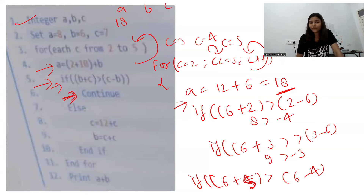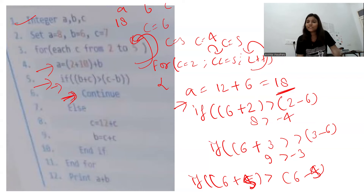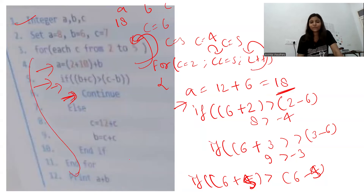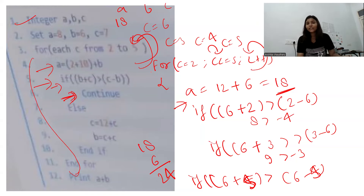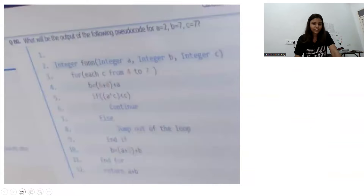For c equals 5: condition b plus 5 equals 11 is greater than 5 minus 6 equals minus 1 — still true, continue again. Then c increments to 6, which fails the loop condition 6 less than equals 5. We exit the loop and print a plus b: a is 18, b is 6, so the answer is 24.